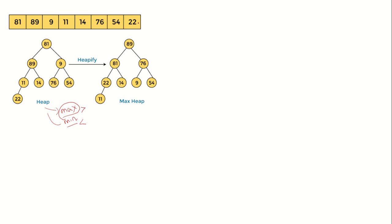Today we are going to consider only the max heap. So when you have an array and you want to sort it, the first and foremost step is to represent it in the form of a heap, and that heap should be a max heap. So initially this tree is not a max heap because the parent is not greater than the left child and the right child. So the first thing you have to do is convert this tree into a max heap.